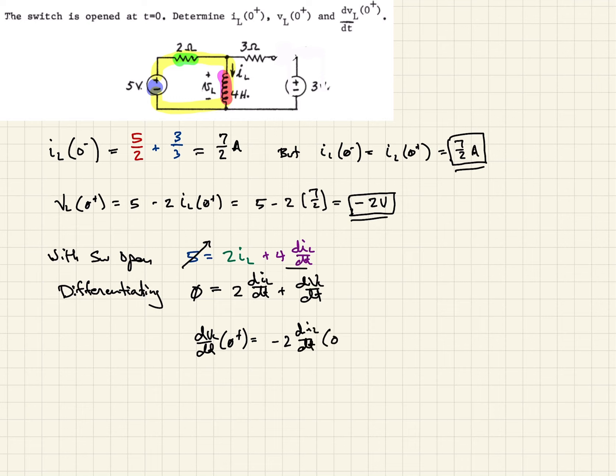And so that's going to be minus 2 times VL at 0 plus over 4 for the inductance. And so when we calculate that out, what we arrive at is 1 volt per second change across the inductor.